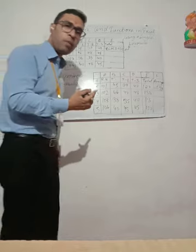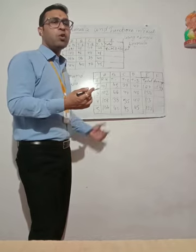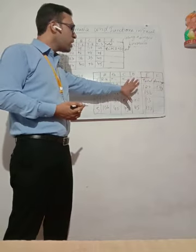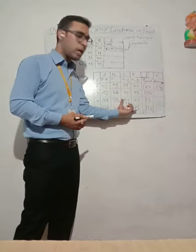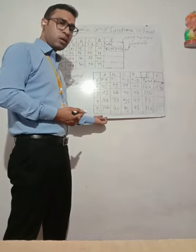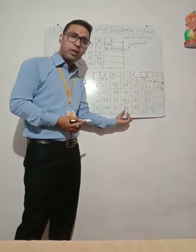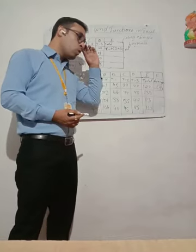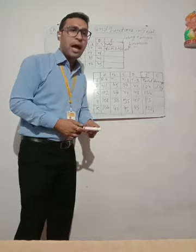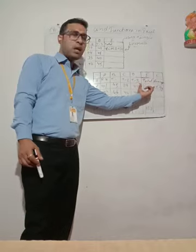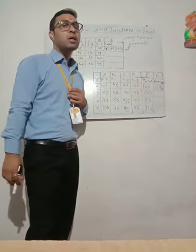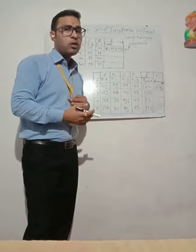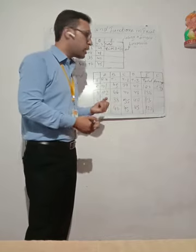Now we will see the compound formula. A compound formula uses more than one operator. We have the same table with roll number, Term 1, Term 2, Term 3, and a Total column already provided. Now we need to calculate the average. Using more than one operator is called a compound formula.